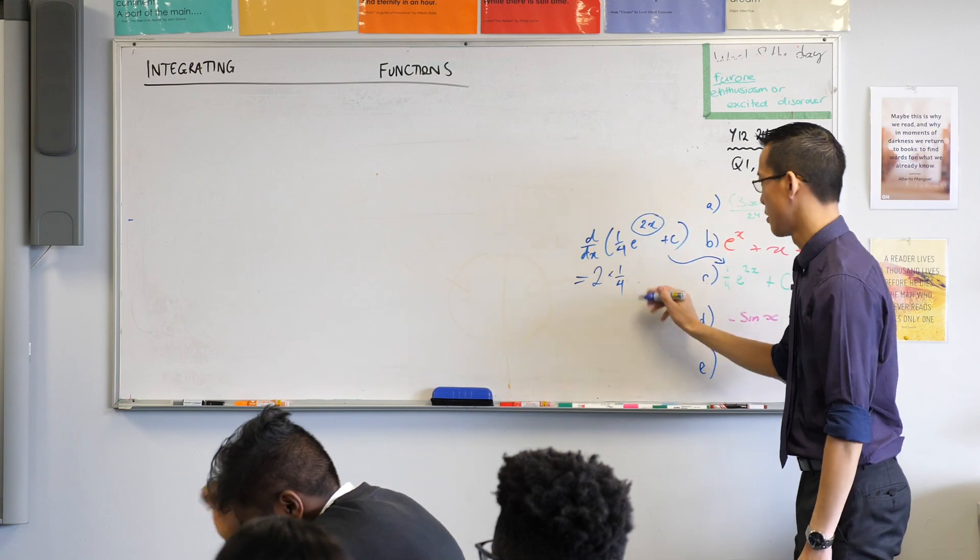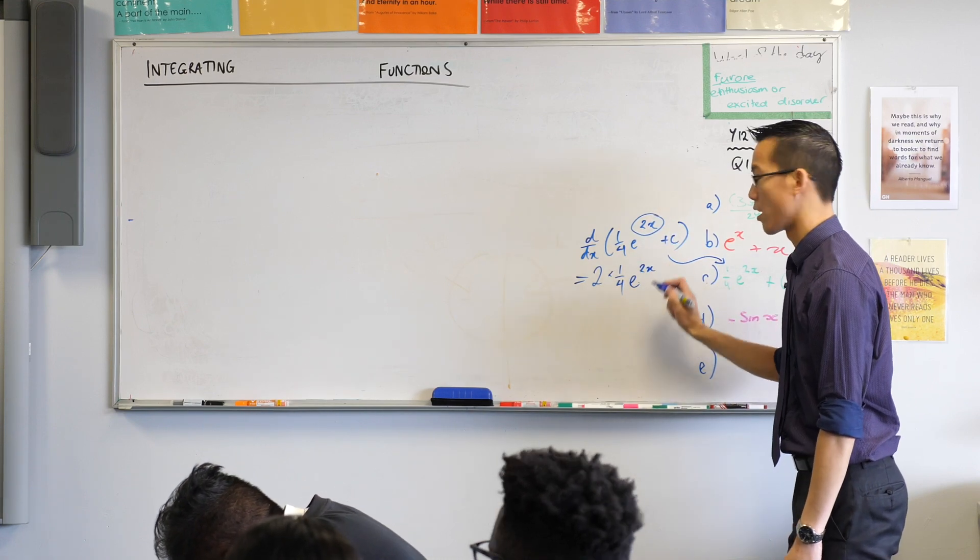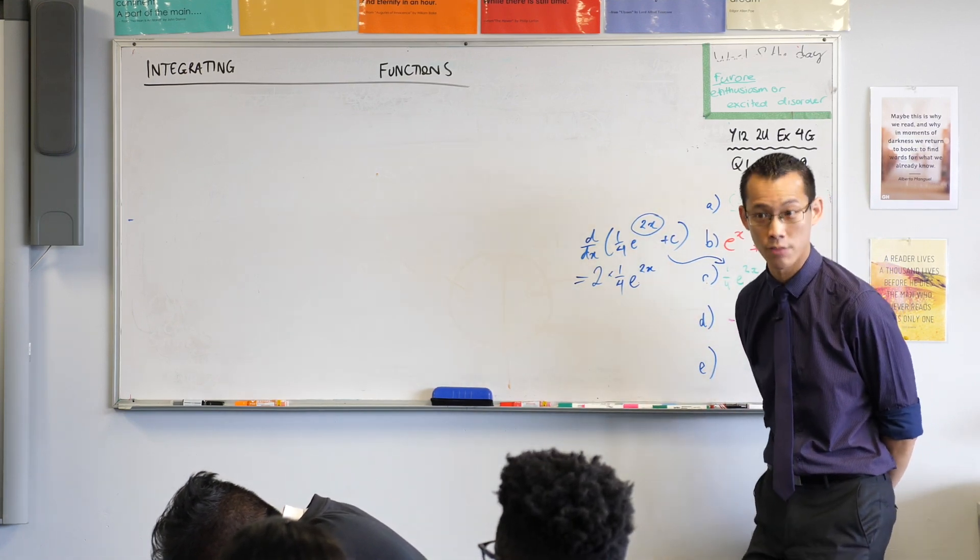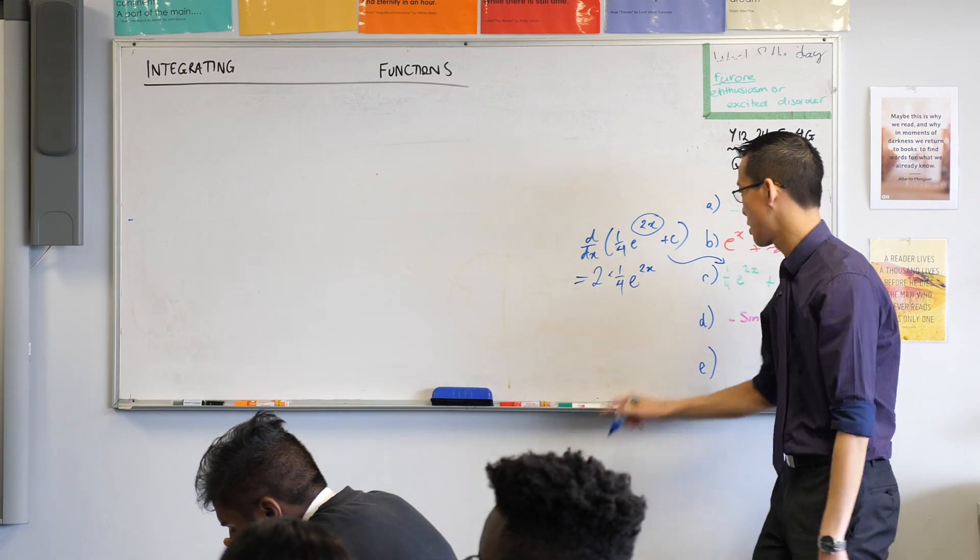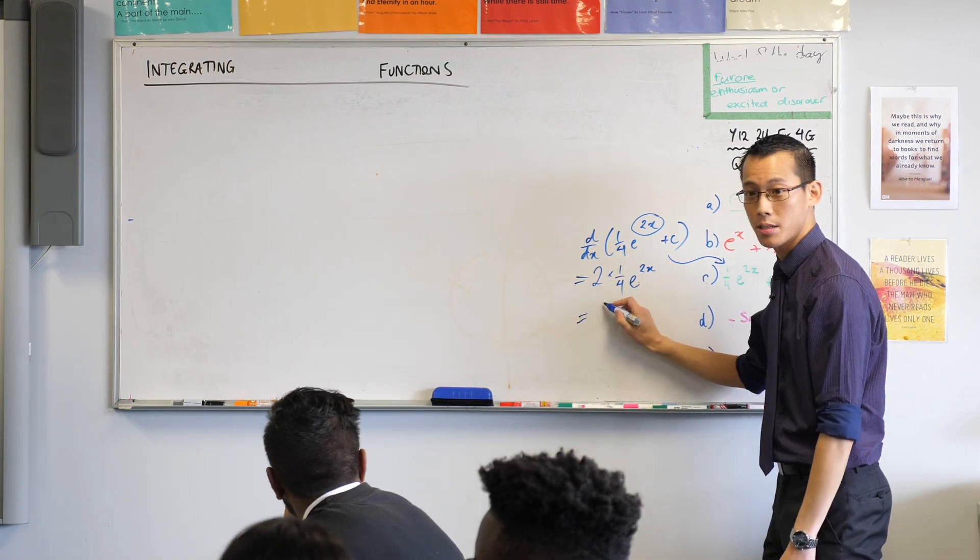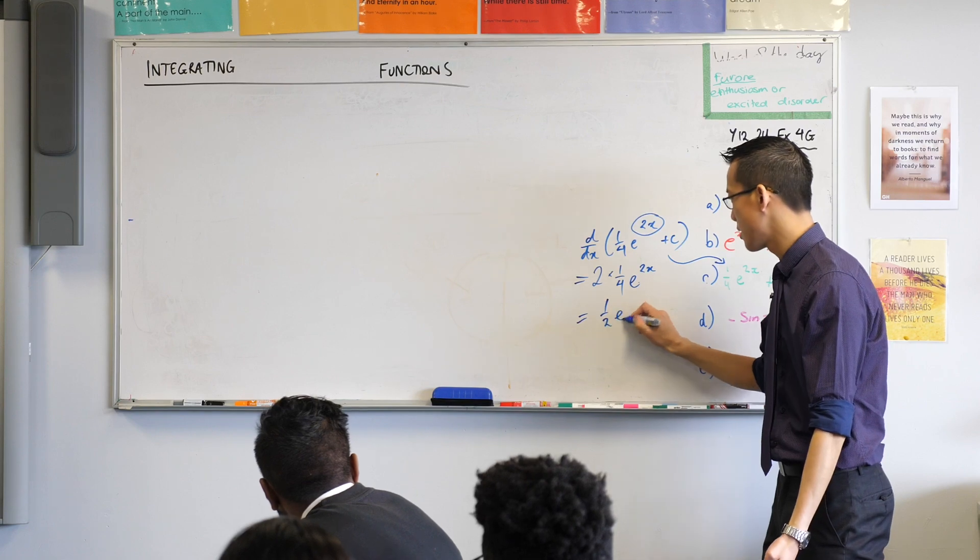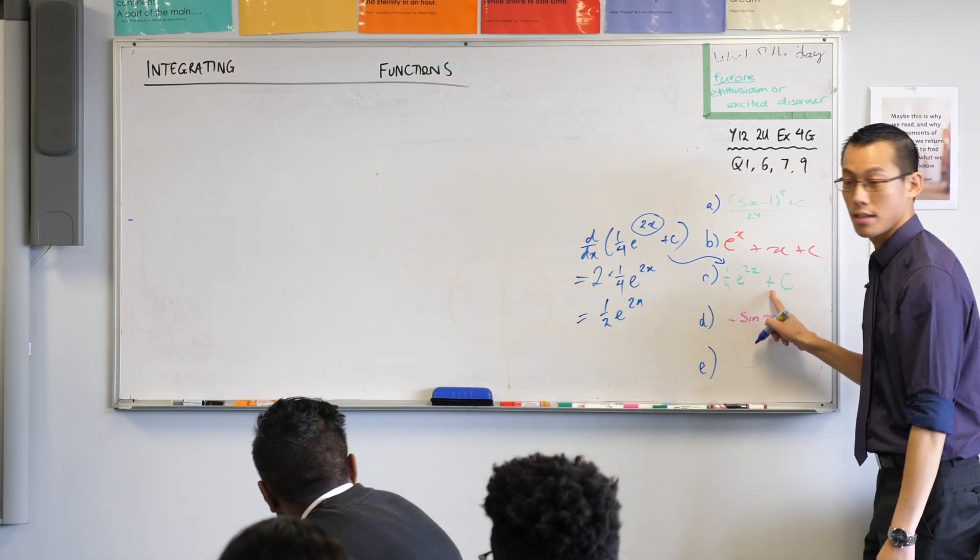So this a quarter e to the 2x gives you back a quarter e to the 2x. What happens to the constant of integration? It's gone. Differentiated, it's constant. Have a look at this. Does this land us back where we wanted? It does. Thumbs up. So this is correct.